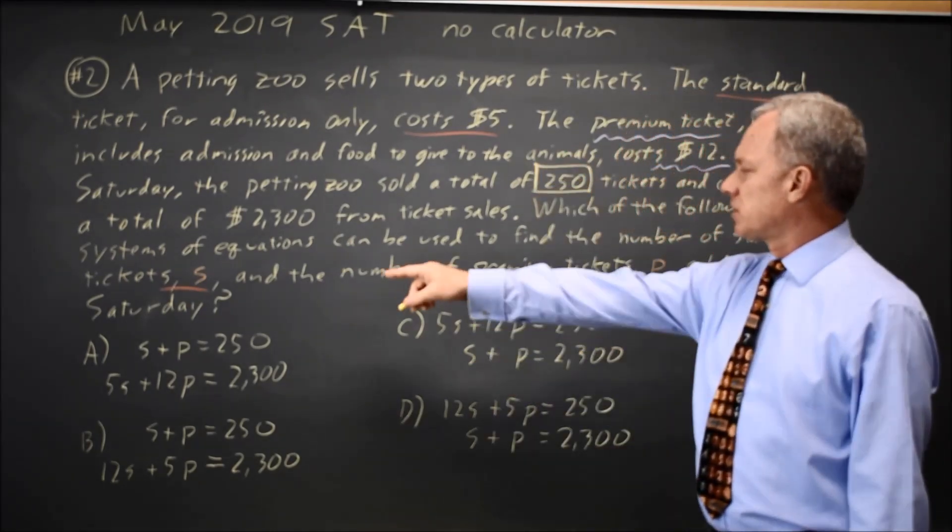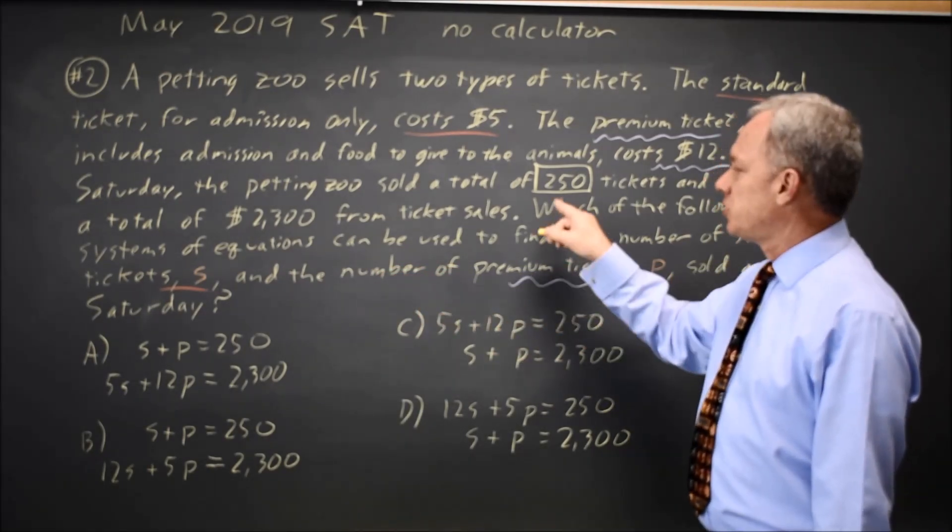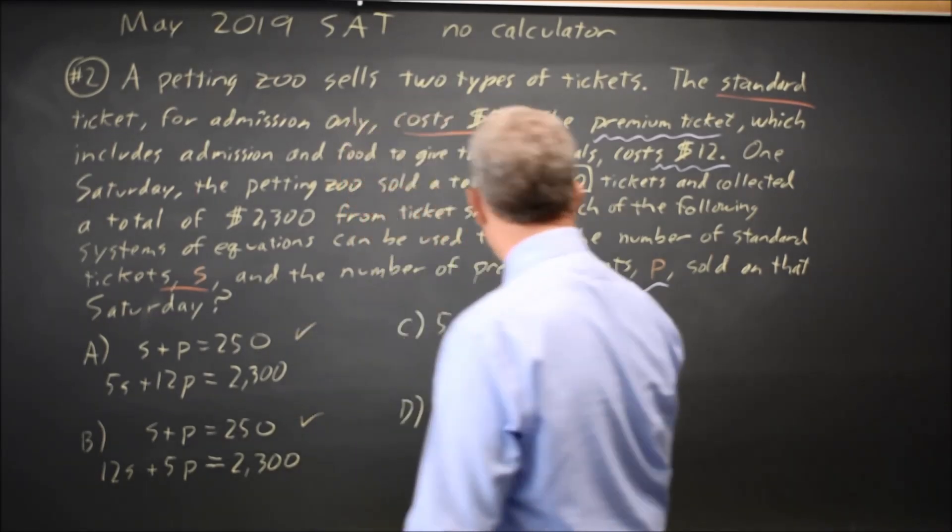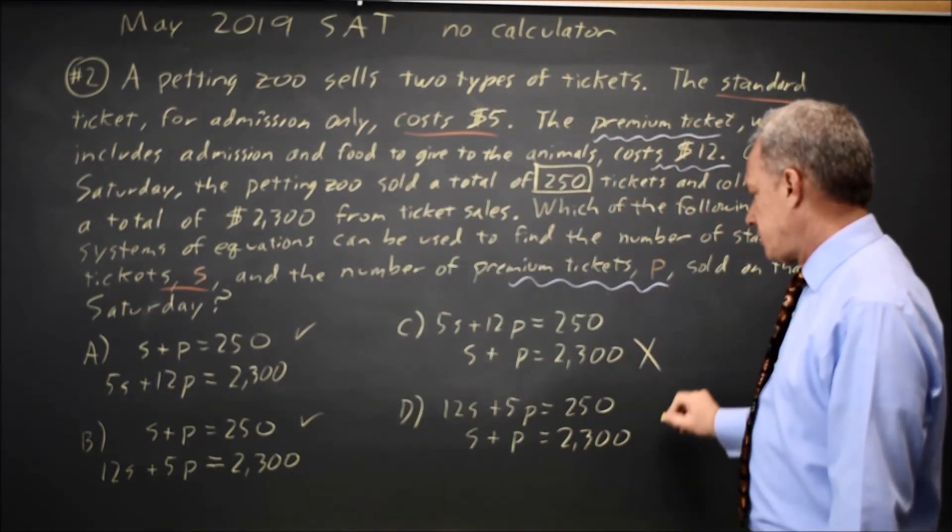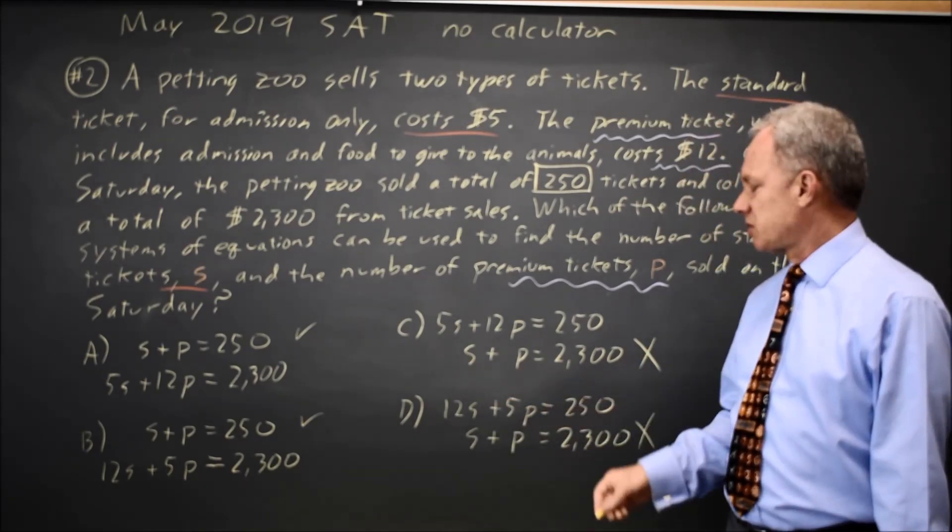So S, the number of standard, plus P, the number of premium, equals 250 the total, which would be the first equation in choices A or B. But that does not match C and D where they're saying the number of standard plus the number of premium is 2300.